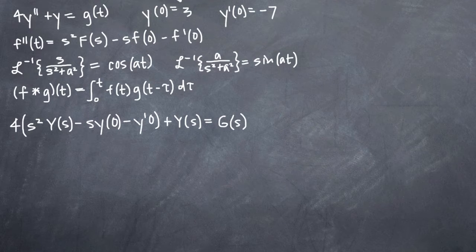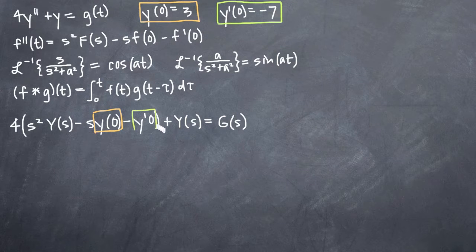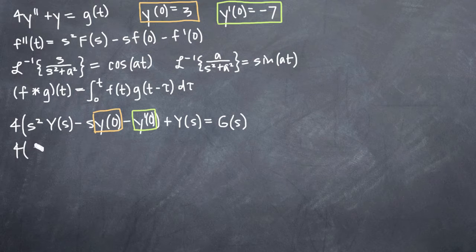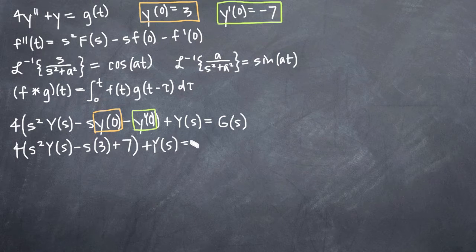Our next step is to plug in our initial conditions and solve for capital Y(s). We have two initial conditions: y(0) equals 3 and y'(0) equals negative 7. We'll have 4 times [s squared Y(s) minus s times y(0), which we know to be 3, minus y'(0) which we know to be negative 7, so we'll call that plus 7], plus Y(s) equals G(s).